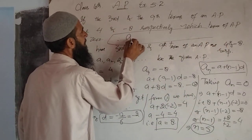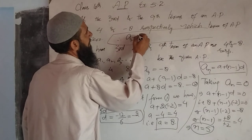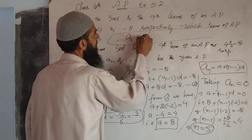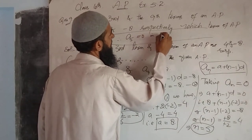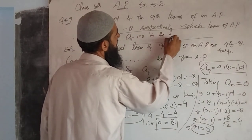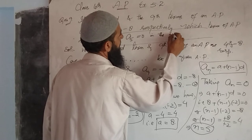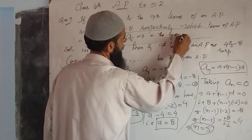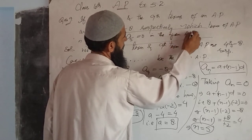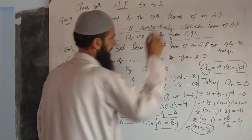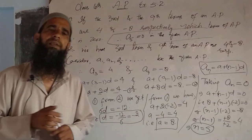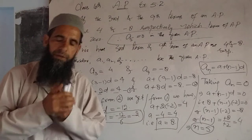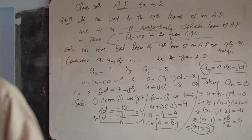Therefore, a5 is equal to 0 in the given arithmetic progression. The solution to this question is now complete. Thank you, have a nice day.